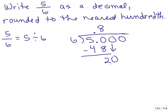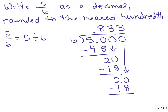How many times does 6 go into 20? Three times. And then we bring down the next 0. How many times does 6 go into 20? Three times. And so now I could round it to the nearest hundredth. The answer is going to be approximately 0.83.